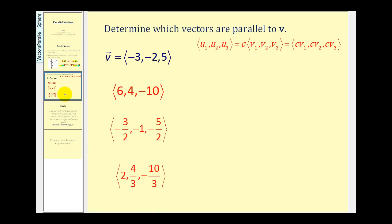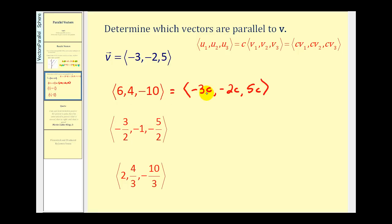Let's determine which of these vectors in red are parallel to vector v in blue. If these vectors are parallel, they must be multiples of one another, or we should be able to express the given vector as c times vector v. So the x component must equal negative three times c, the y component must equal negative two times c, and the z component must equal five times c. If six must equal negative three c, that makes c equal to negative two. Using this value of c, negative two times negative two is positive four — that checks. Positive five times negative two is negative ten — that checks. Therefore this vector is parallel to vector v.